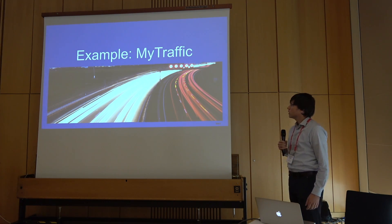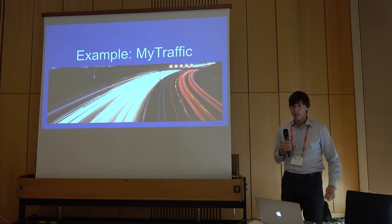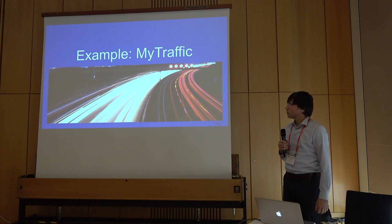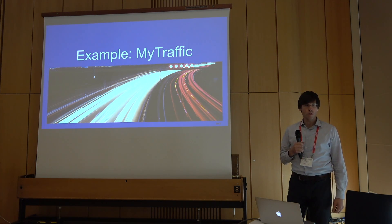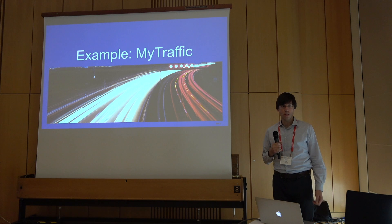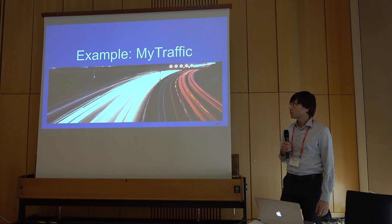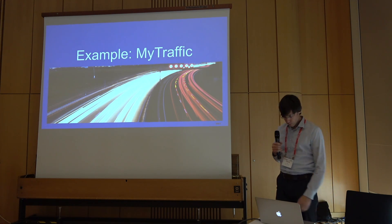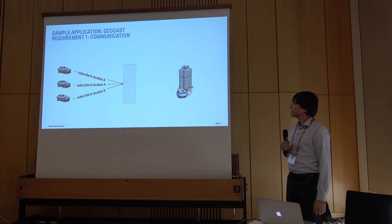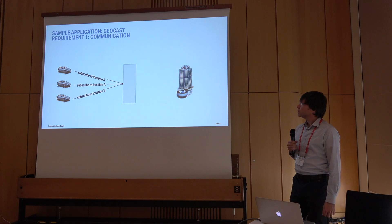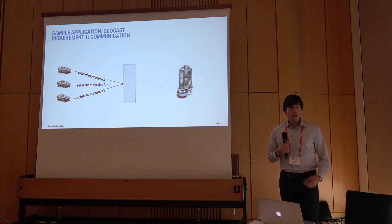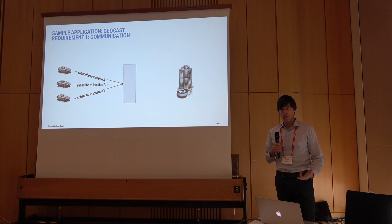I want to walk through a sample use case. This use case doesn't necessarily exist — any similarity to actual events is purely coincidental. Let's imagine we're making a MyTraffic use case: we want to send traffic information to the navigation system of the vehicle so it can show where there's a traffic jam on the highway. So we're going to have some sort of a geocast — vehicles in a certain segment of the highway getting traffic information for that segment.